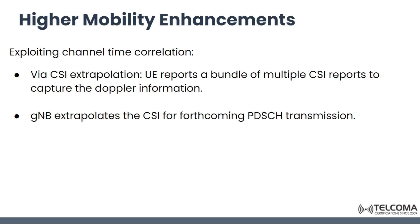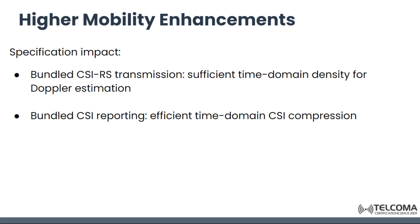Higher mobility enhancements exploit channel time correlation via CSI extrapolation. The UE can report a bundle of multiple reports to capture Doppler information, and the gNodeB can extrapolate the CSI for further PDSCH transmissions. The specification impact includes bundled CSI-RS transmission with sufficient time domain density for Doppler estimation, and bundled CSI reporting means efficient time domain CSI compression.